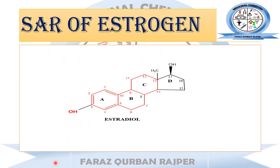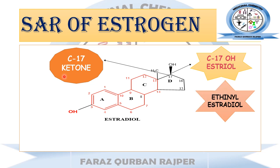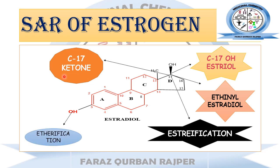These are the different types of synthetic derivatives made from estradiol. To summarize the SAR of estrogen: we discussed the structure of estradiol and its derivatives — estrone formed by C17 hydroxyl oxidation, estriol having hydroxyl groups at positions 3, 17, and 16, ethinyl estradiol made by C17 ethinyl substitution, esterification producing ester derivatives at the 17th position, and etherification producing ethers by substituting the 3rd position hydroxyl group with methyl.